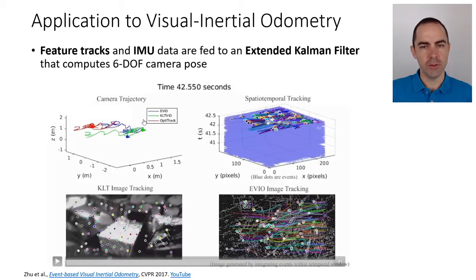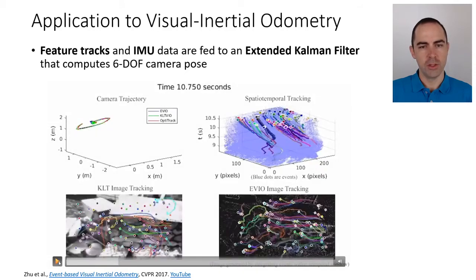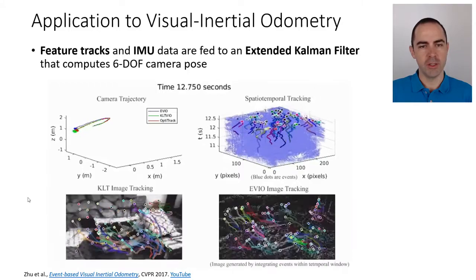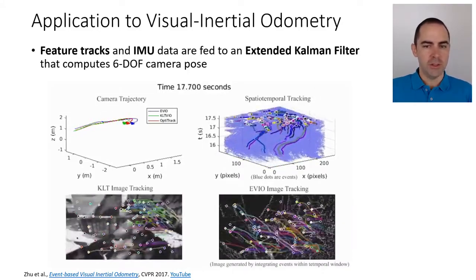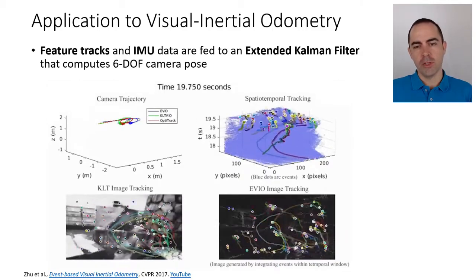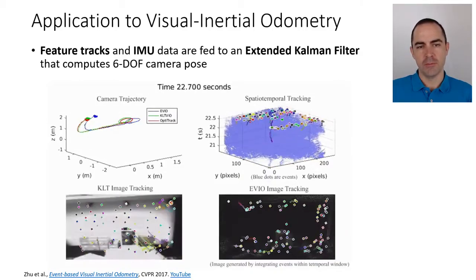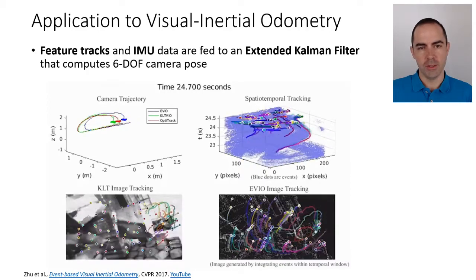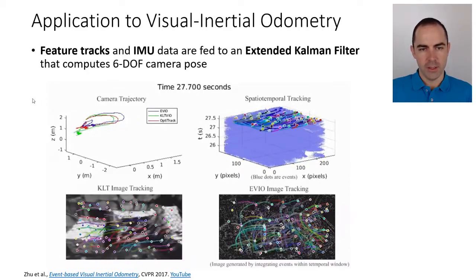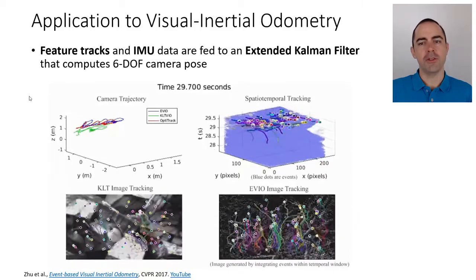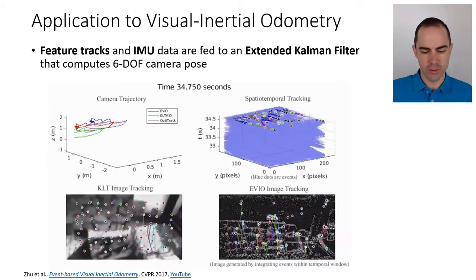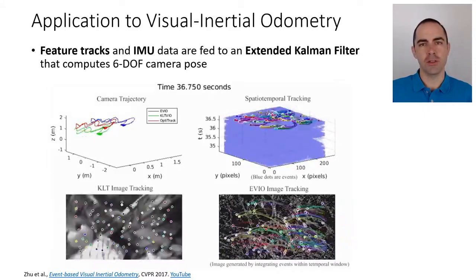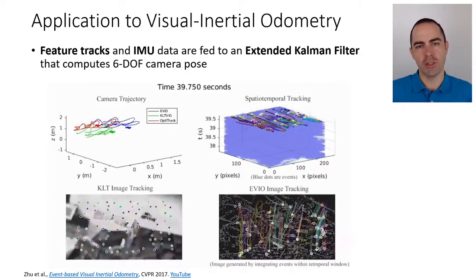In red is the ground truth, and in blue is the output of the algorithm that is compared to, in green, by another algorithm. At the beginning they are more or less close to each other, but as errors accumulate and drift accumulates, they diverge. Nevertheless, it shows that these features that were detected using the events can be useful for higher applications such as visual odometry, visual-inertial odometry in this case.